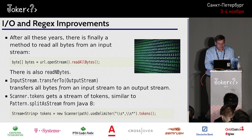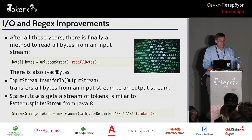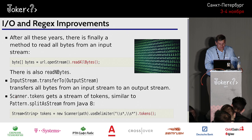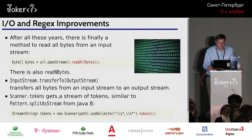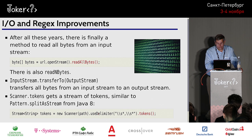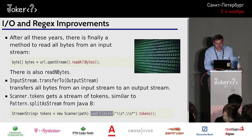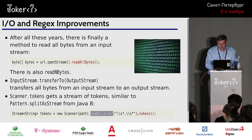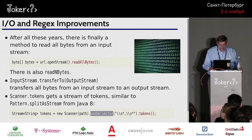Another convenience method: Scanner is not fast but certainly convenient. Now scanner.tokens() gives you a stream of all tokens. That's particularly useful with useDelimiter() for a custom delimiter. Here I'm getting a stream of things separated by whitespace and a comma, calling .tokens(), and then processing with the usual stream operations.